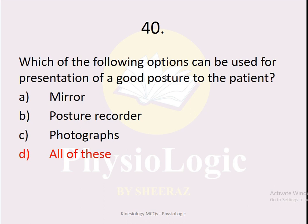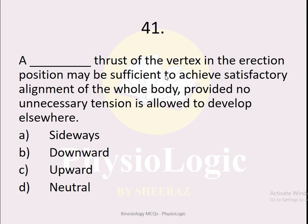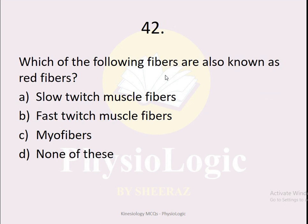MCQ number 41: A dash thrust of the vertex in the erection position may be sufficient to achieve satisfactory alignment of the whole body, provided no unnecessary tension is allowed to develop elsewhere. The options are sideways, downward, upward, or neutral. The correct option is option C, upward — an upward thrust of the vertex in the erection position may be sufficient.